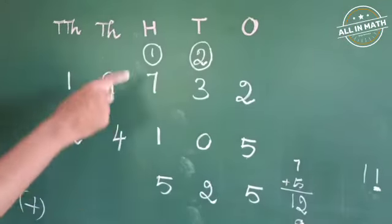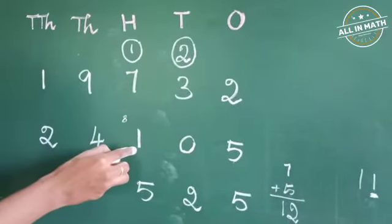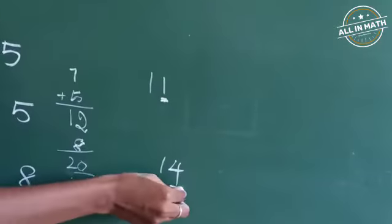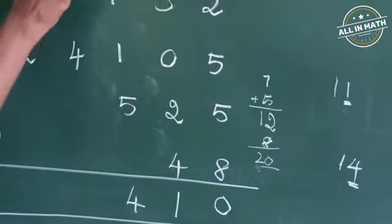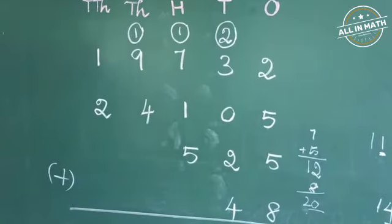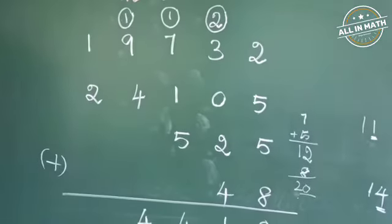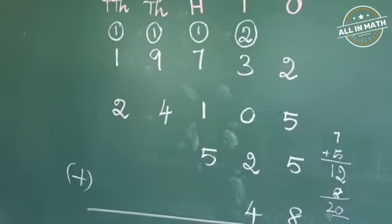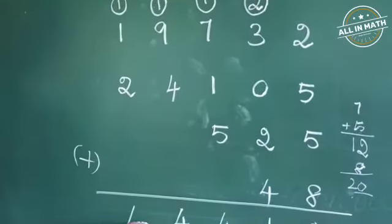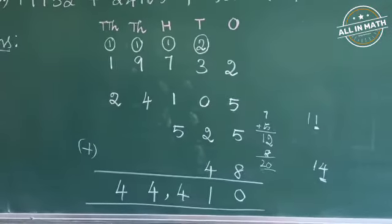Now we are going to add all the numbers in the 100's column. 1 plus 7 is 8. 8 plus 1 is 9. 9 plus 5 is 14. So put 4 in the 100's place and the number 1 in the 1000's place as a carry over. Now we are going to add the numbers in the 1000's place. 1 plus 9 is 10. 10 plus 4 is 14. So write 4 in the 1000's place and 1 in the 10,000's place as a carry over. Now add 1 plus 1 plus 2 — all together we get 4. Finally, the sum of the given numbers is 44,410.